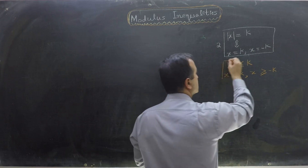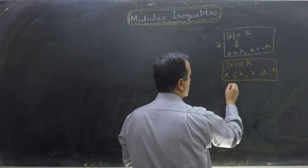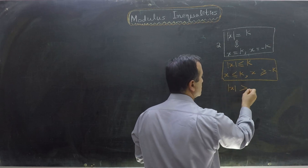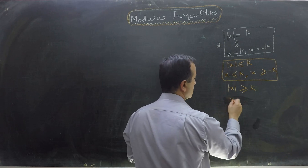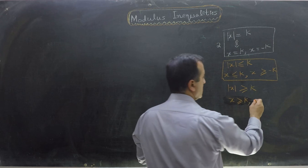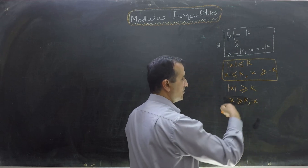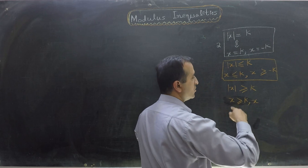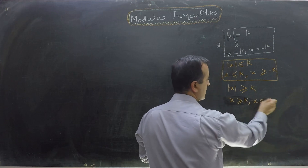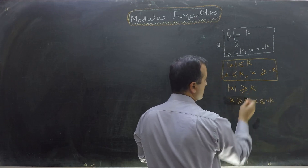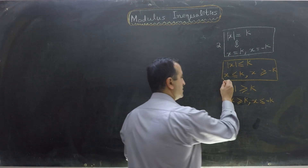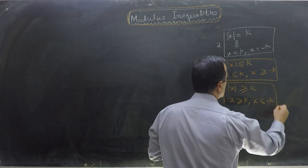Similarly, we can extend this rule for the greater than or equal to inequality. So if mod of x is greater than or equal to k, then x is greater than or equal to k, and x is less than or equal to minus k — because of the minus sign, the inequality switches from greater than to less than. This is our new rule number 2.